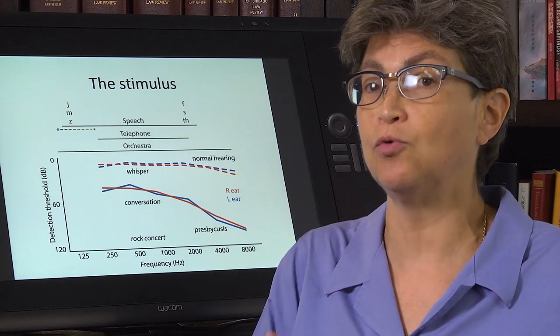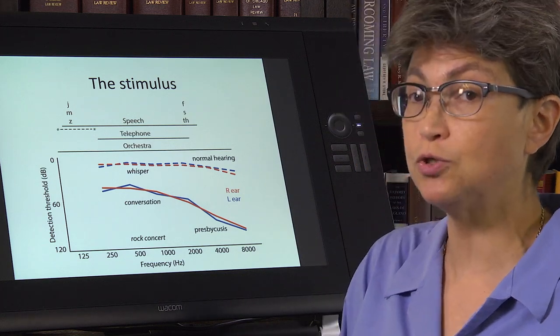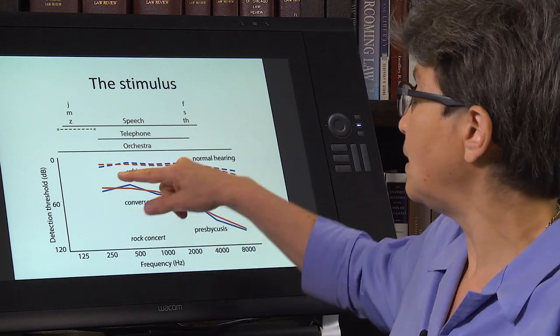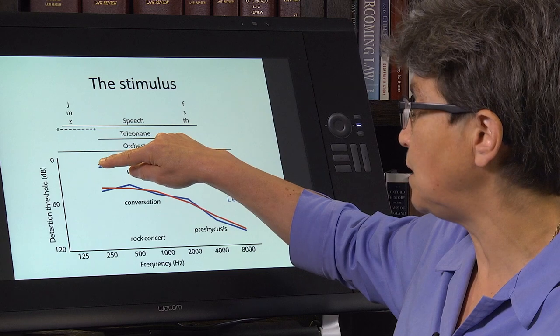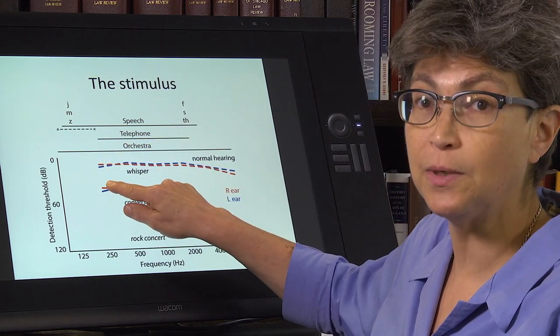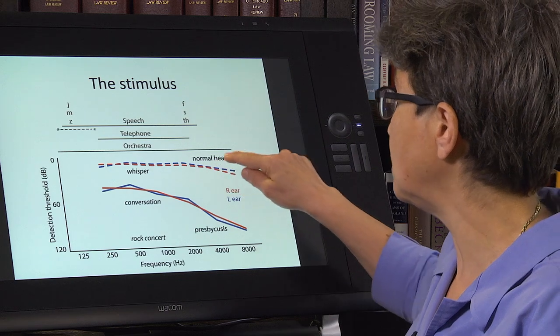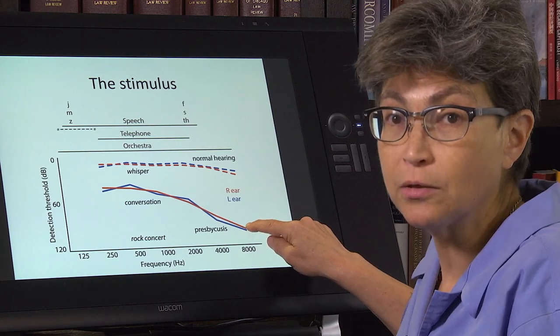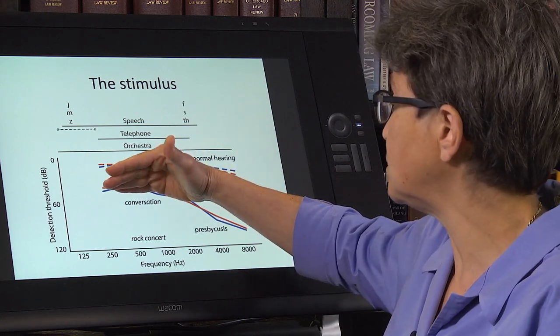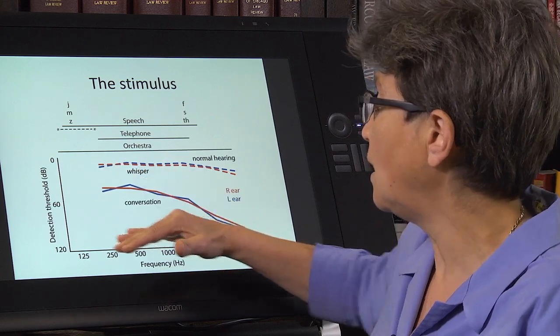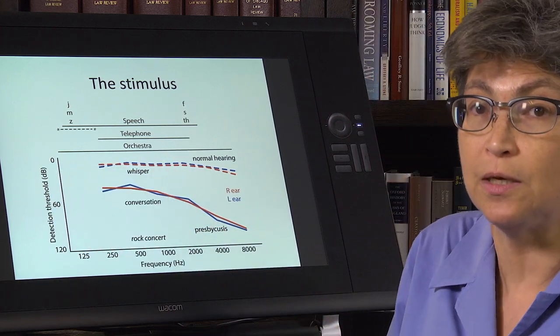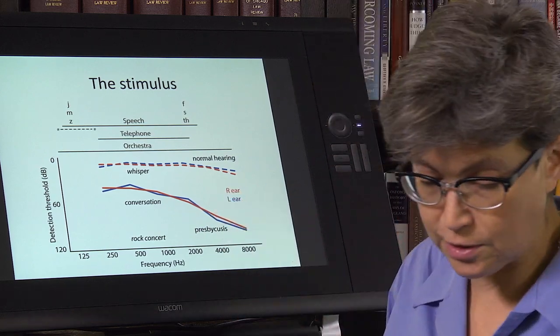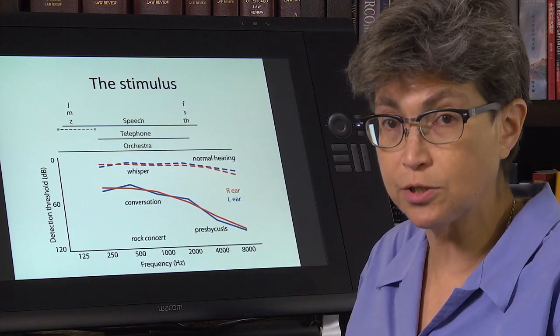But when a person gets what's called presbyacusis, old hearing, then now, instead of taking say 10 dB to hear here, it requires 50 dB or 40 dB. And up here, instead of taking 10 or 15 dB, now it takes, you know, now you have to be shouting. So this is a whisper. This is a conversation is around 60 dB. And a rock concert is around 110, 120 dB. So now you have to shout to get this person to understand these frequencies. And that's what hearing loss looks like.